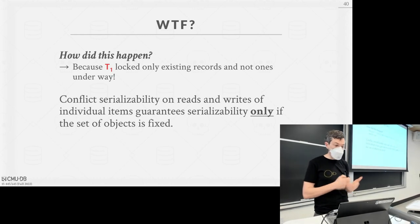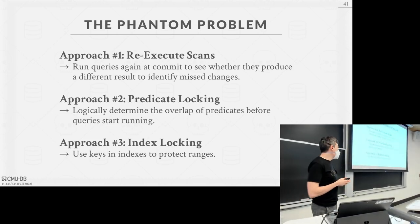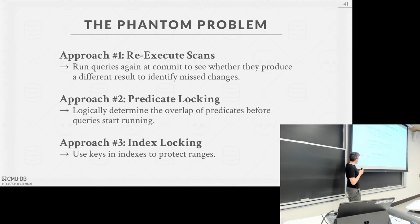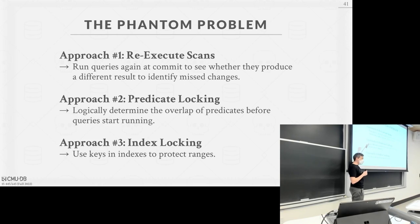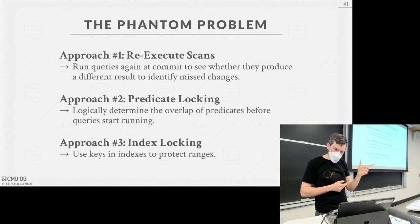Basic two-phase locking and OCC are not going to handle phantoms. There are three ways to handle this. Index locking is what most traditional systems do. Predicate locking only exists in the literature — one system does an approximation; it's ideal but very difficult, like a unicorn. Re-execute scans is the simplest approach and you typically only see it in in-memory systems because you don't have to read from disk again.